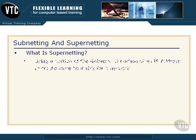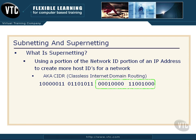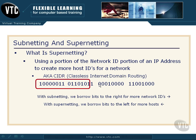Now, what is supernetting? Supernetting is where we do just the opposite — we use a portion of the network ID to create more hosts for a network. This is also called Classless Internet Domain Routing, or CIDR. With subnetting we borrowed bits to the right; with supernetting we borrow back to the left. That gives us more bits for host IDs and fewer bits for networks. Usually you combine two networks and then start to borrow to the left for CIDR. This is one of the tricks that helped preserve IP addresses on the public network for years.